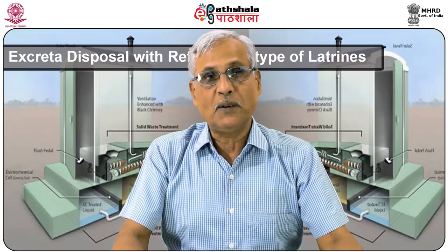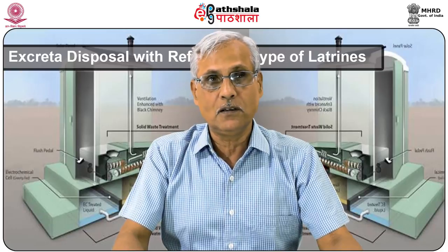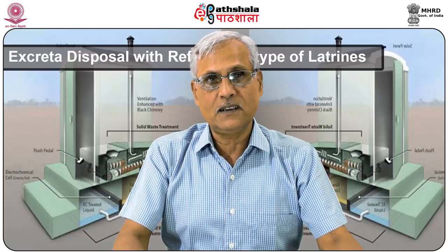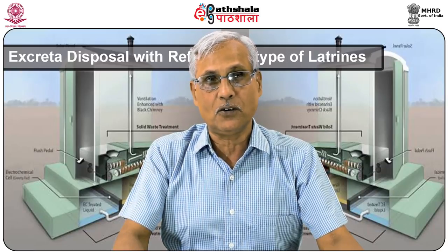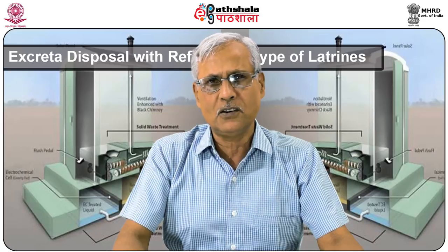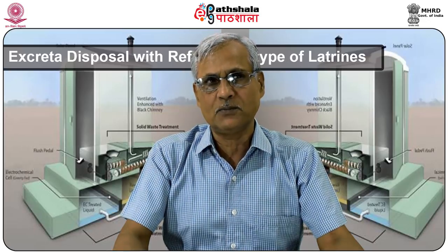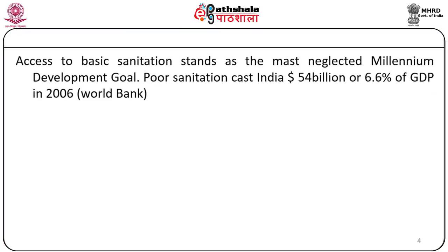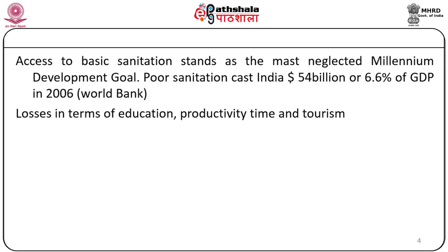Millennium Development Goals were initiated around 2000 and eight goals were set. Among all the goals, access to basic sanitation stands as the most neglected Millennium Development Goal. Poor sanitation costs India around 54 billion US dollars, or 6.6% of GDP, according to 2006 estimates of the World Bank. There are a number of losses in terms of educational attainment, productivity, time, and it also affects tourism.